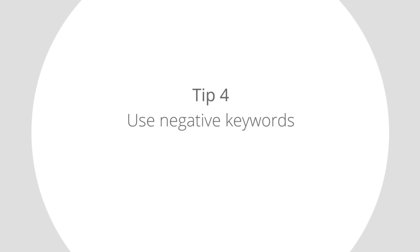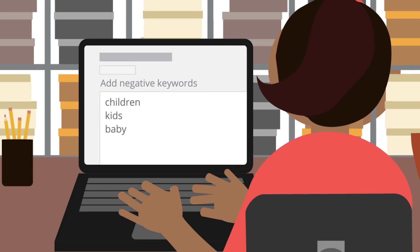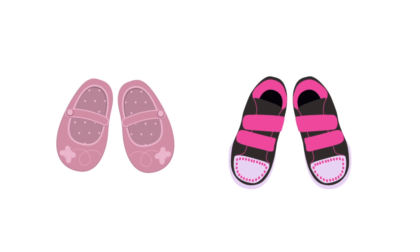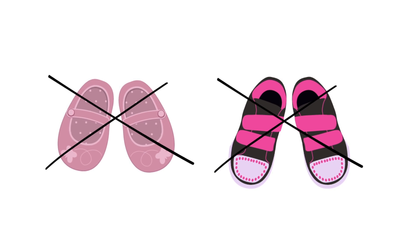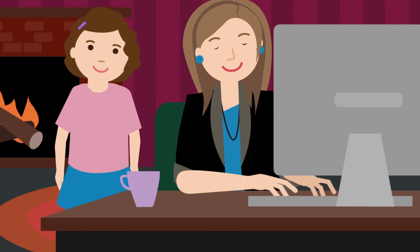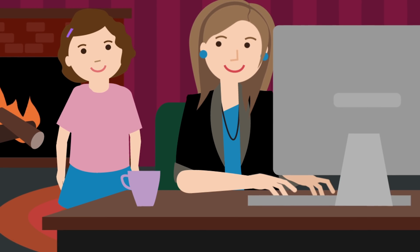Tip 4: Use negative keywords. Negative keywords ensure your ads don't show to the wrong people. Mary doesn't sell children's shoes, so she adds "children" and "kids" to her negative keyword list. This way, Mary can be sure she isn't paying for ad clicks on a product she doesn't sell.